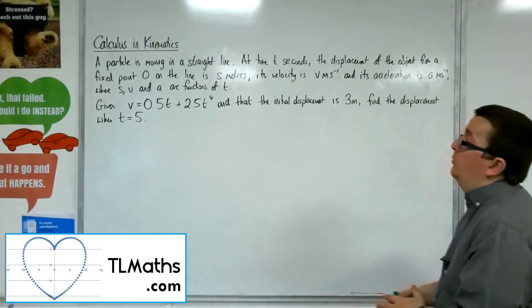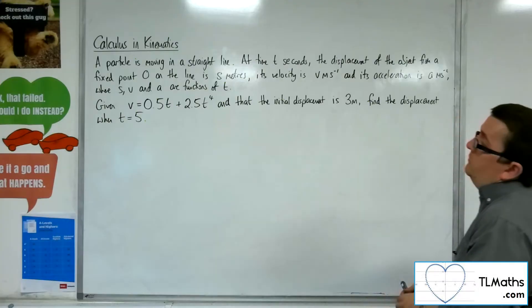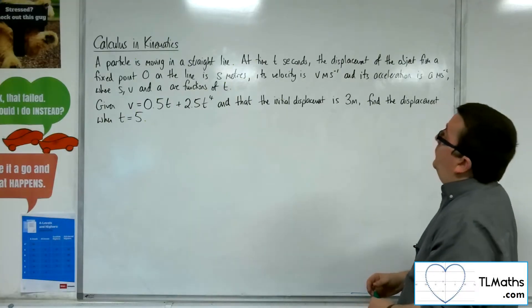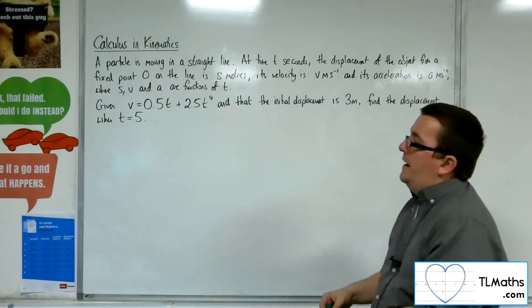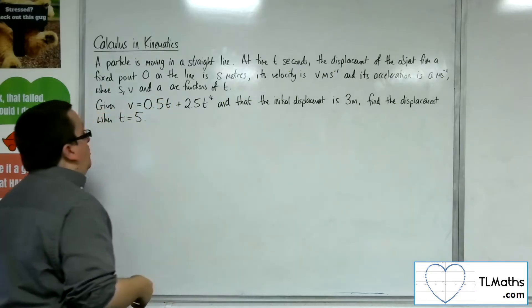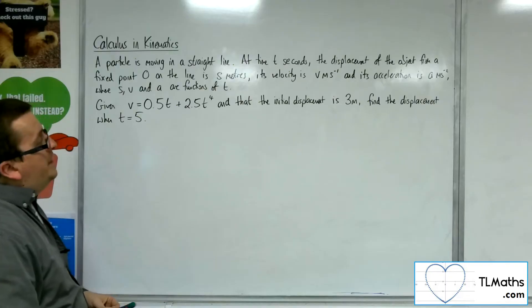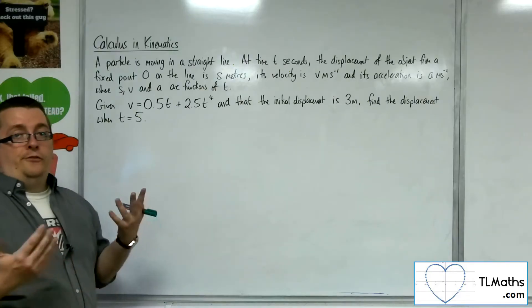In this video, a particle is moving in a straight line. At time t seconds, the displacement of the object from a fixed point O on the line is s meters, its velocity is v meters per second, and its acceleration is a meters per second per second, where s, v, and a are functions of t. Given that the velocity is 0.5t plus 2.5t to the 4, and that the initial displacement is 3 meters, find the displacement when t is 5.